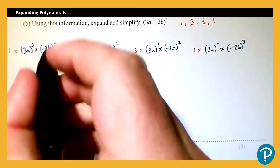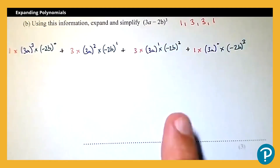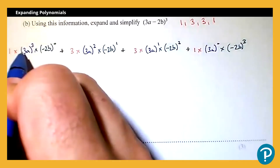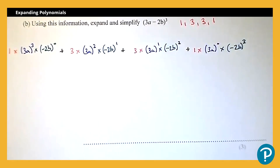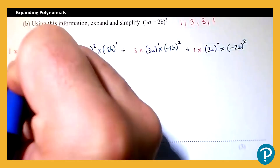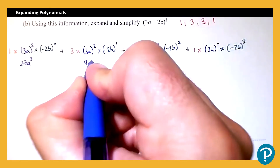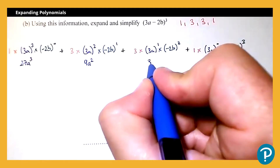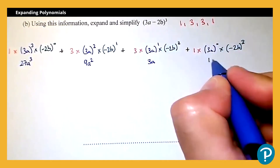Just like the previous example we add addition signs and expand each bracket first. (3a)³ means 3a × 3a × 3a, giving 27a³. (3a)² gives 9a². (3a)¹ is just 3a. And (3a)⁰ is 1.